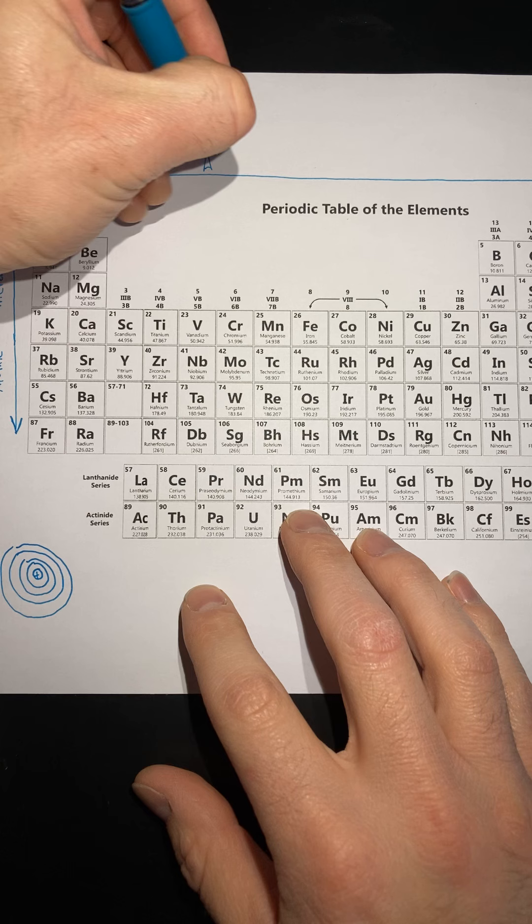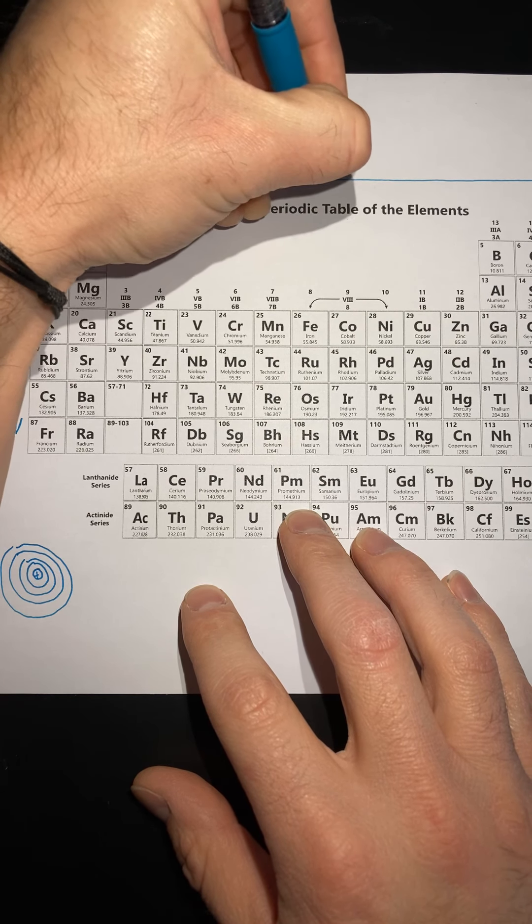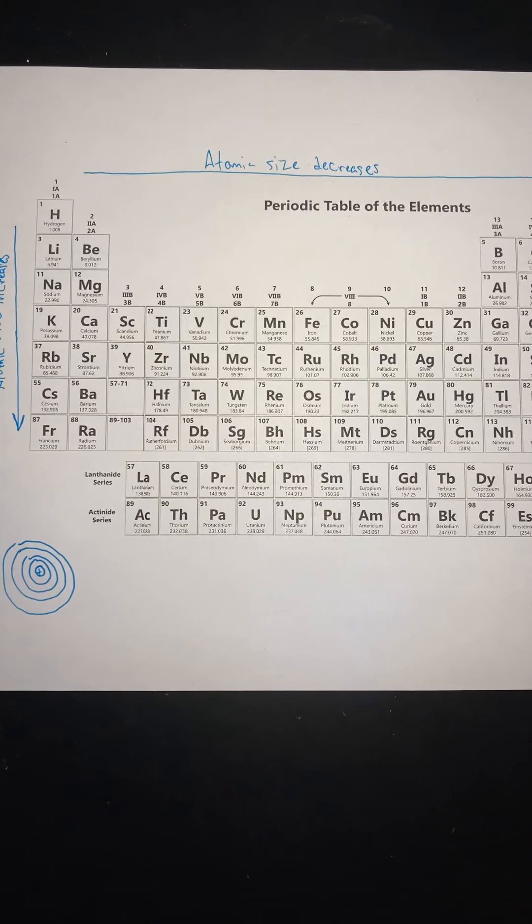So, in this case, atomic size decreases because the pull coming from the nucleus is stronger and it pulls the outer energy level in further. So, as you go left to right, size decreases. Okay?